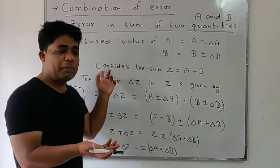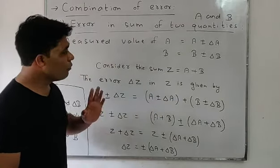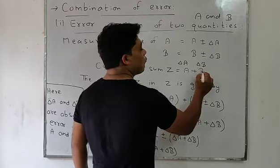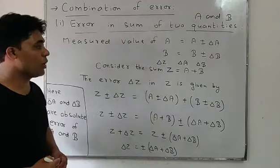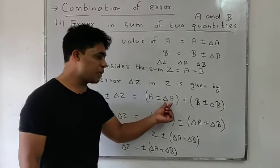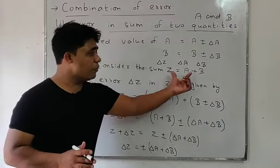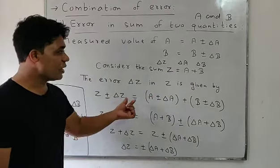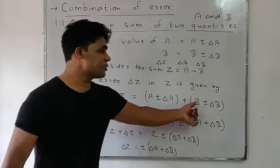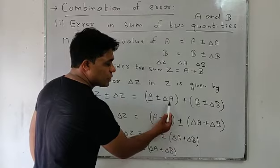So what will be the sum of a and b? Suppose z is the sum, so z equals a plus b. We know delta a is the absolute error of a, delta b is the absolute error of b, and delta z is the absolute error of z. The measured value is written as z plus-minus delta z equals a plus-minus delta a plus b plus-minus delta b.